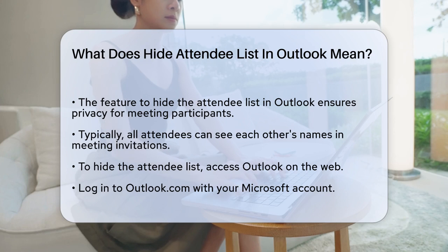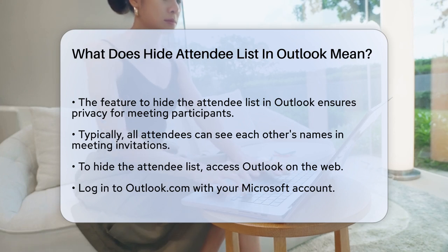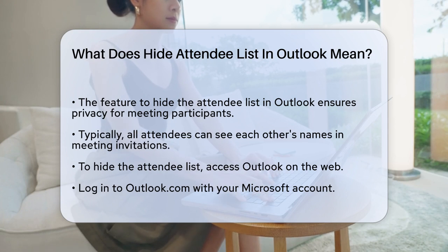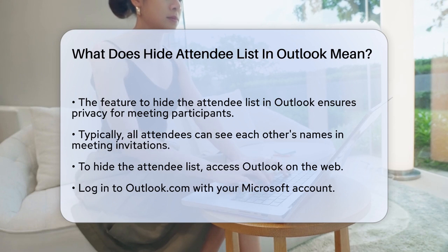When you send out meeting invitations in Outlook, typically all the attendees can see each other's names. However, there's a feature that allows you to hide this list, ensuring that each attendee only sees their own name and not the names of the other participants.